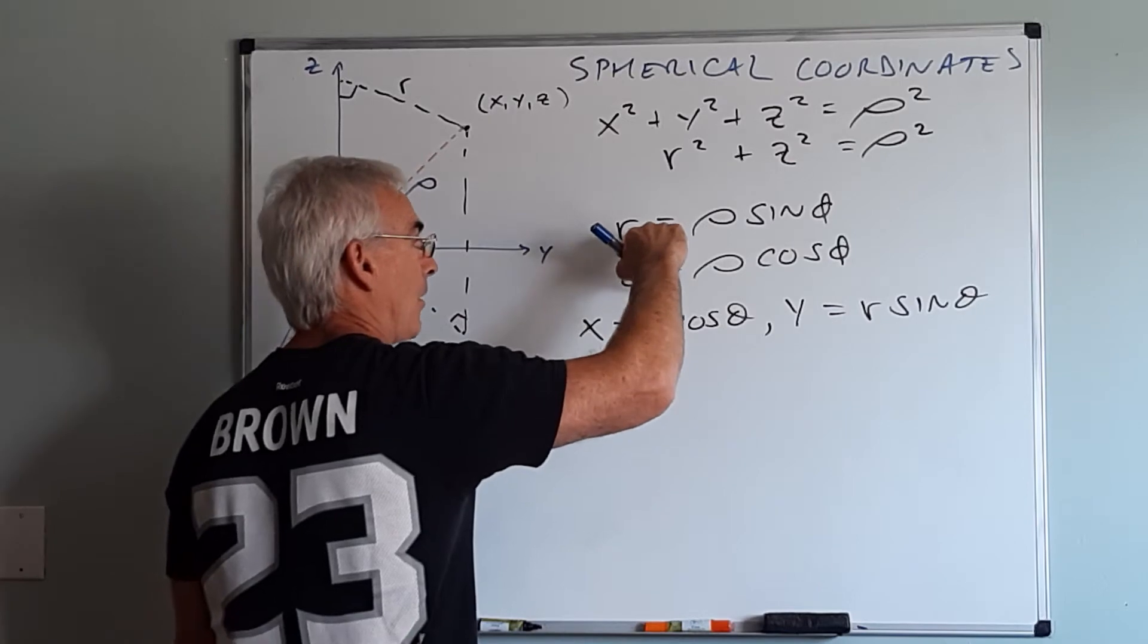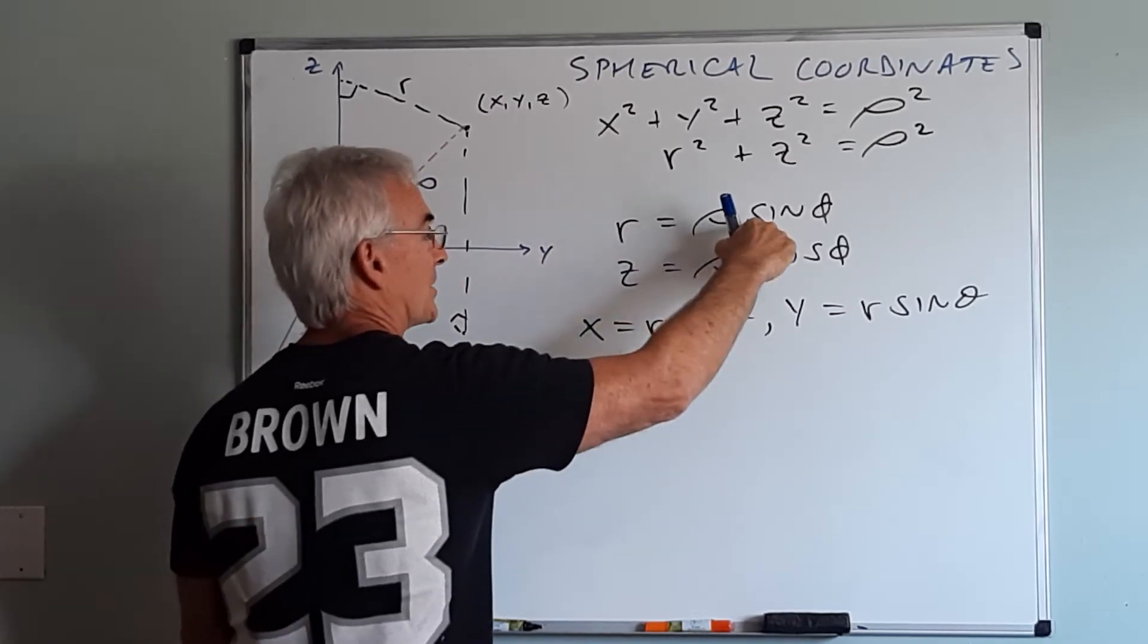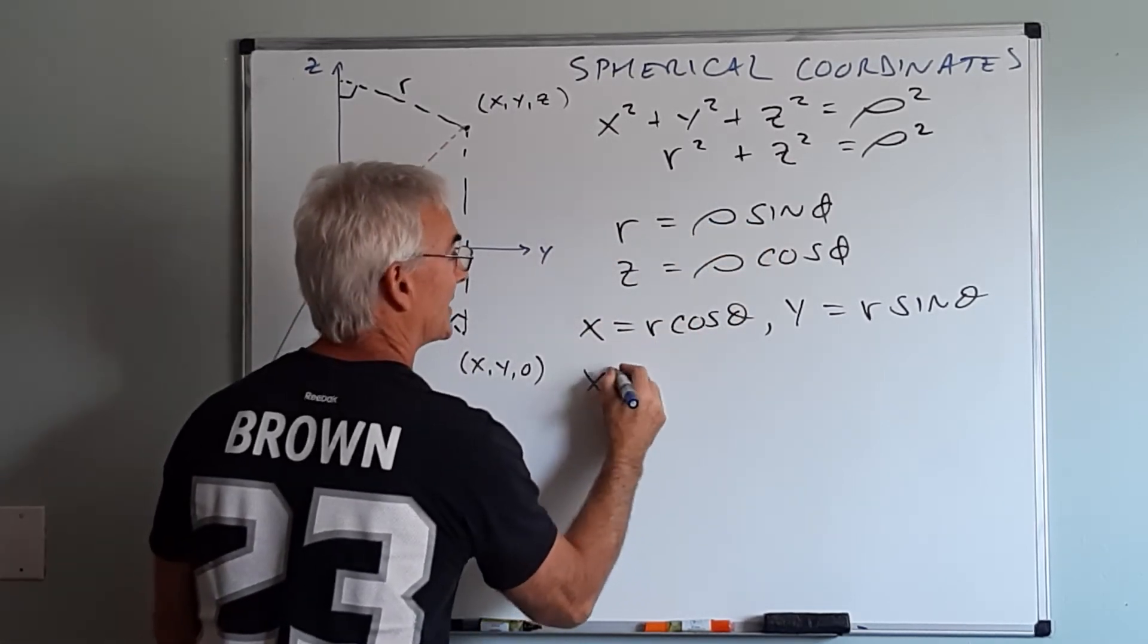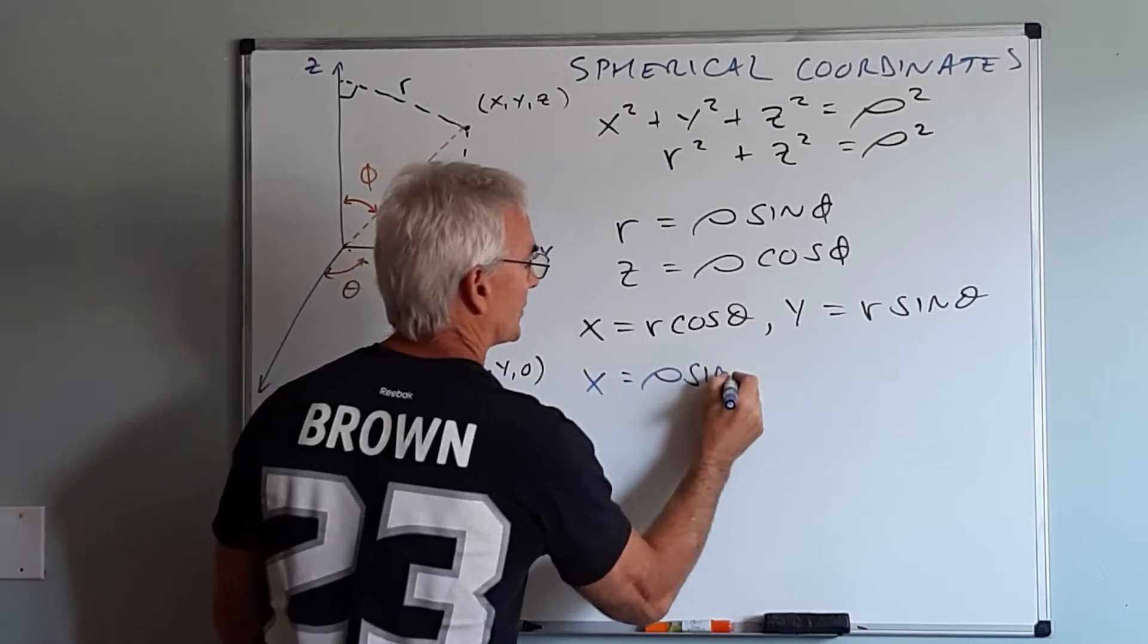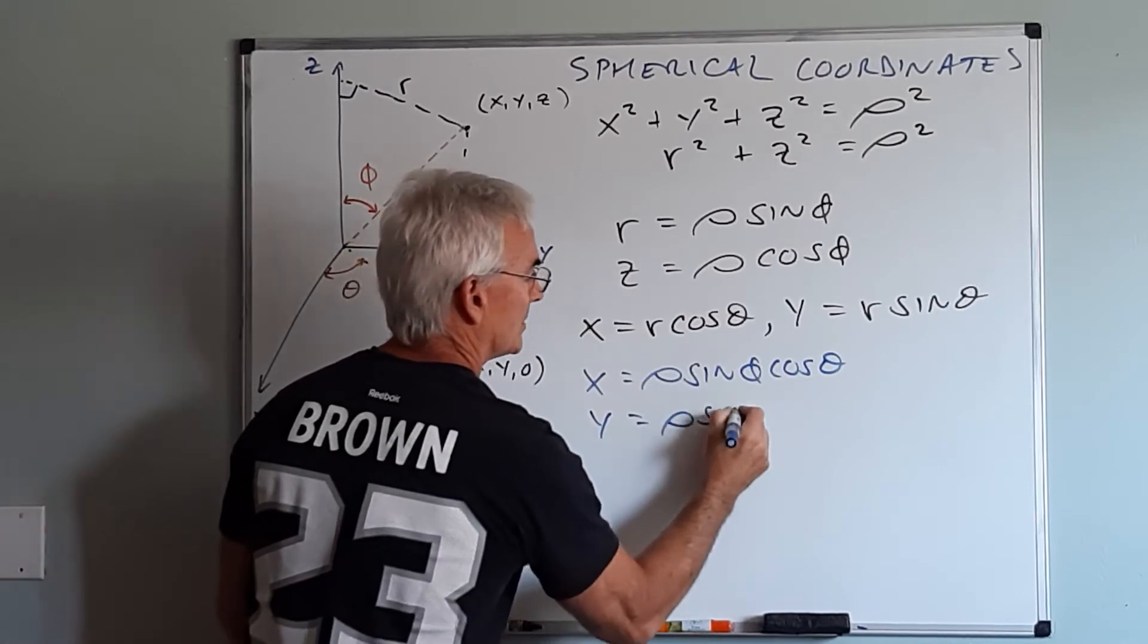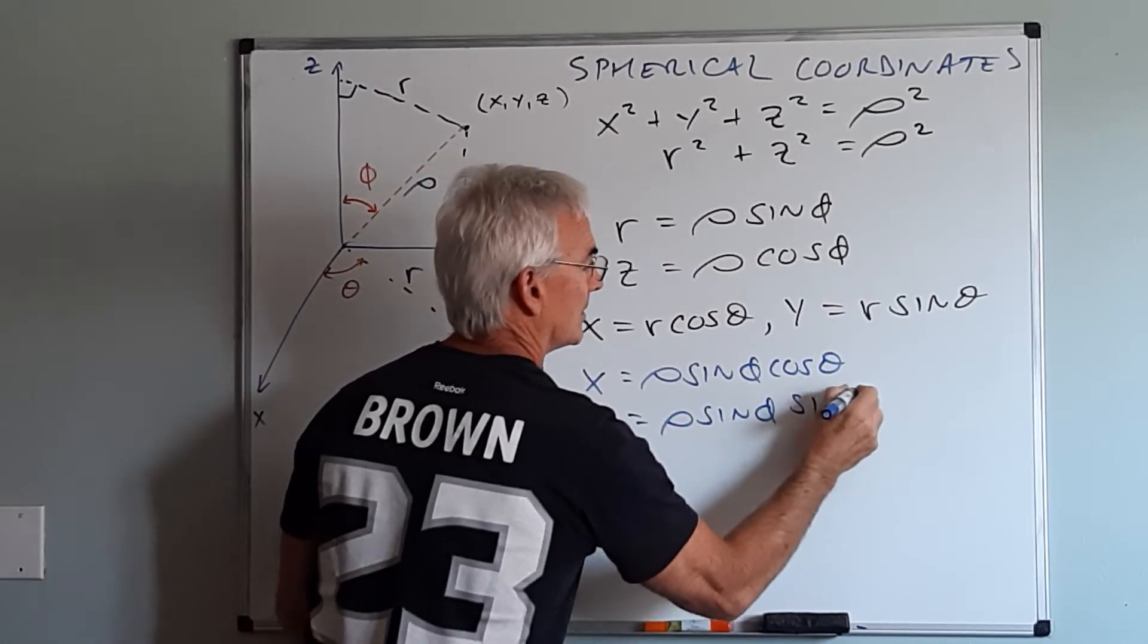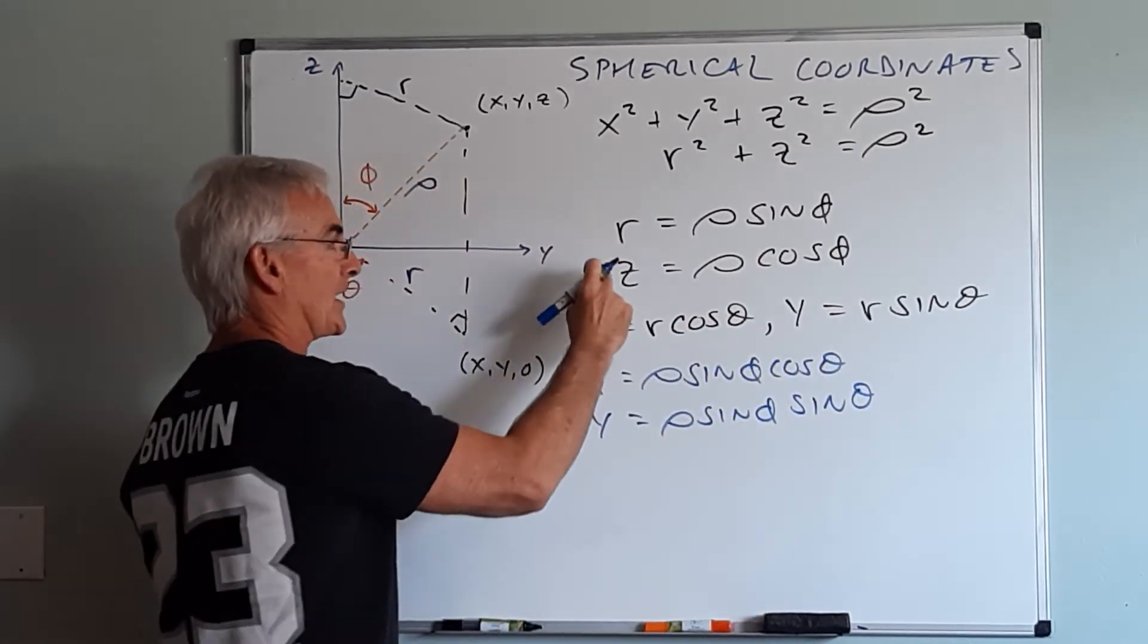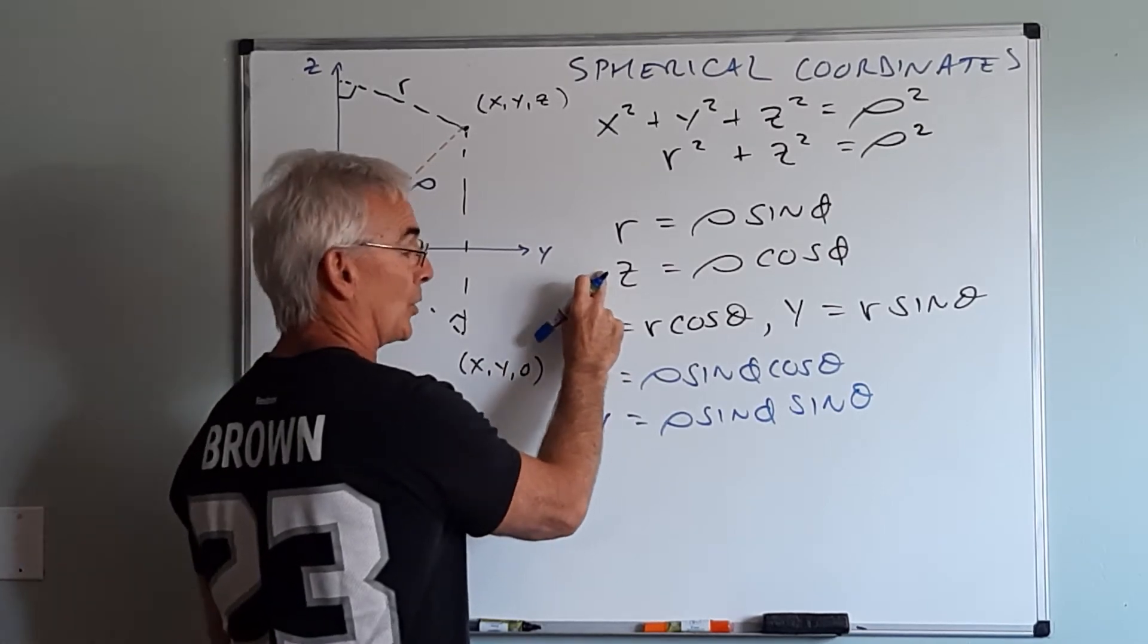By replacing R with rho sine phi, I get then that x equals rho sine phi cos theta, y equals rho sine phi sine theta, and I've already got z equals rho cos phi.